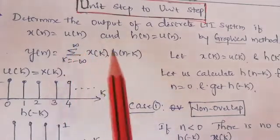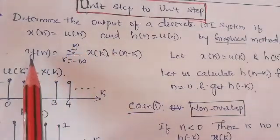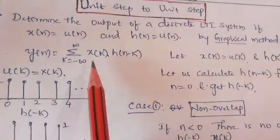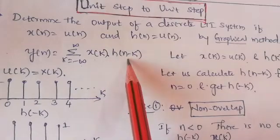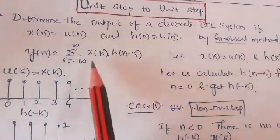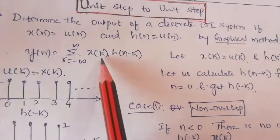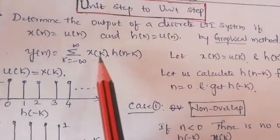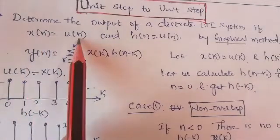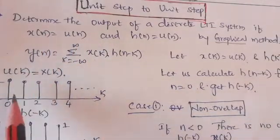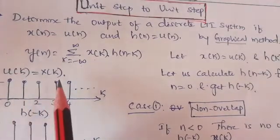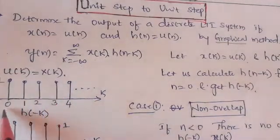We have the formula for finding the convolution: Y(n) = summation from k = -∞ to +∞ of X(k) multiplied by H(n-k). Both X(n) and H(n) need to be represented in the form of index k. So first, X(k) = u(k), which equals 1 where k ≥ 0.